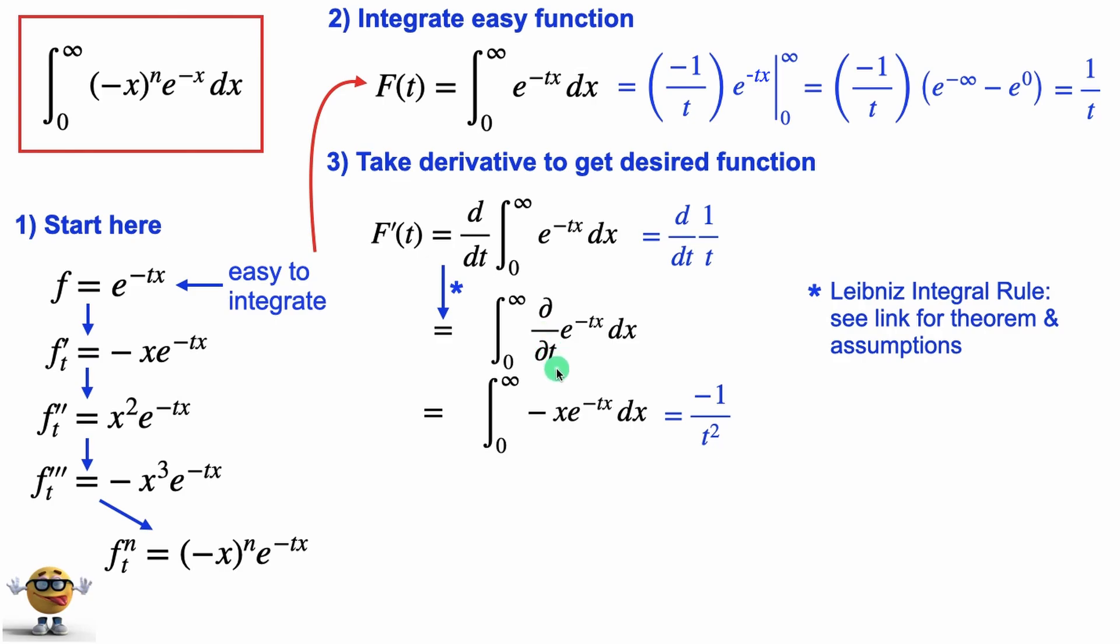So if we continue this, continue to do successive derivatives, just like what we did here, and we do n derivatives, we're left with the integral of the function that we want right here. Negative x^n e^(-tx) dx. And if you follow this one through here,